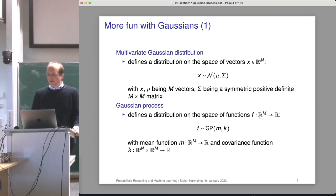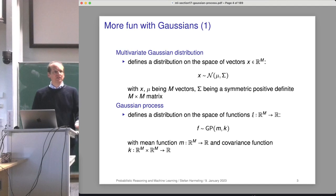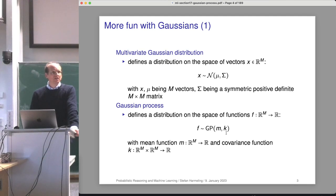Gaussian processes also define a distribution, but not on the space of vectors — on the space of functions. We have some function F from R^M to R, and we write F is distributed according to a GP with two parameters M and K. The mean is now not a vector but a function from R^M to R. Similarly, we have a covariance function which takes two vectors as inputs.